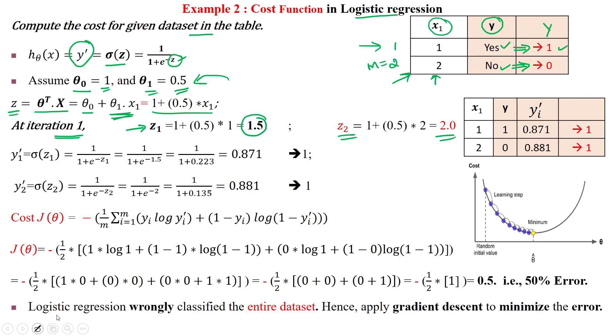Apply the sigmoid function on g₁ for the hypothesis function for sample 1: 1/(1 + e^(-1.5)), which gives 0.871.